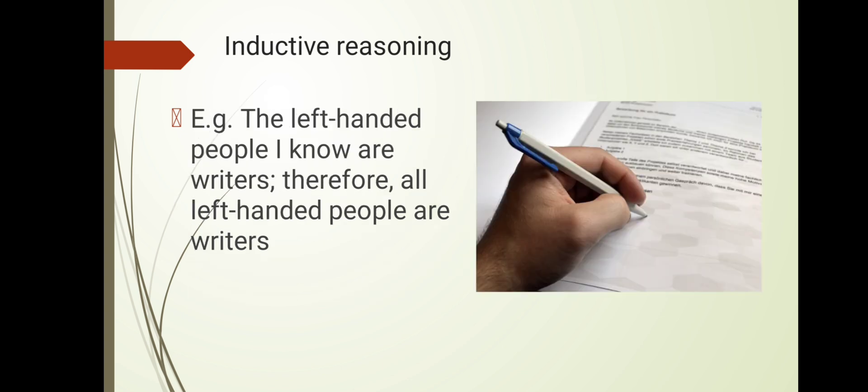For example: the left-handed people I know are writers; therefore, all left-handed people are writers. This is inductive reasoning — generalizing from specific known cases.